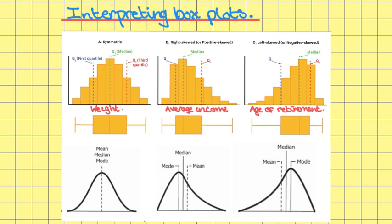In a right skewed or positively skewed distribution, most of our data points are to the left of the histogram. The median occurs in the middle of the distribution, the mode is generally to the left because that's where most of the data points are, and the mean tends to be to the right of the median. The tail goes off in the positive direction.